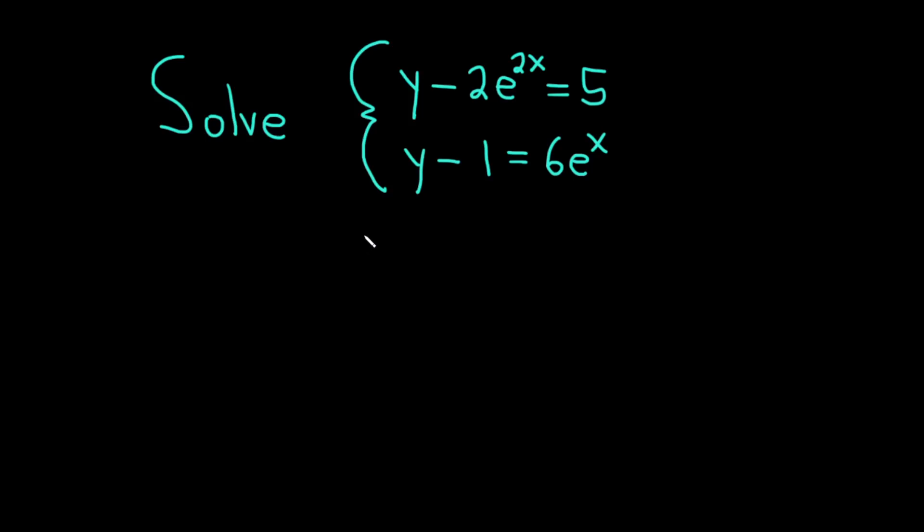Hello, in this video we're going to solve a system of equations. The first equation is y minus 2 times e to the 2x equals 5, and the second one is y minus 1 equals 6 times e to the x. Let's go ahead and carefully work through this solution.